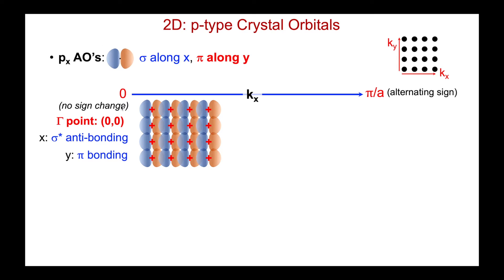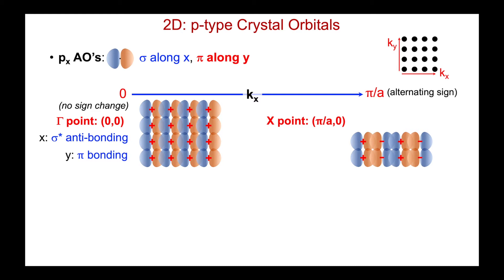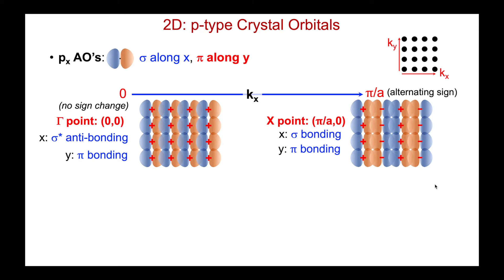Let's systematically change kx from zero up to pi over a, keeping ky equal to zero. We'll go to our so-called x point, which is kx = π/a, ky = 0. Now I have kx = π/a, so I'm alternating signs. For sigma p interactions, when I alternate signs that gives me favorable bonding sigma interactions. ky is still zero, so we just repeat the same sign arrangement in each row — no sign changes in the y direction. Now everything's bonding: we're bonding along x (sigma) and bonding along y (pi bonding).